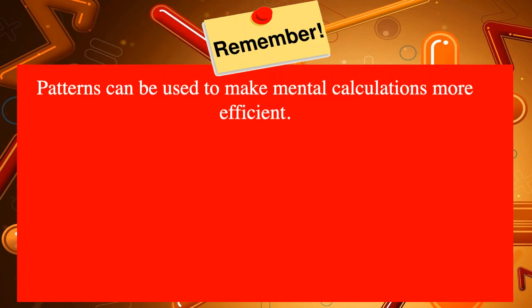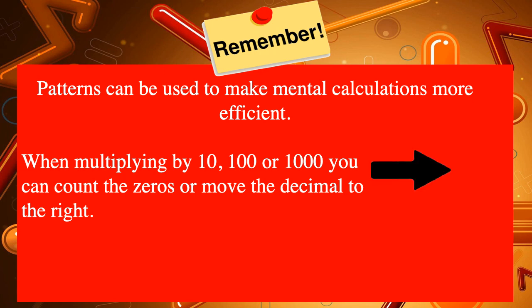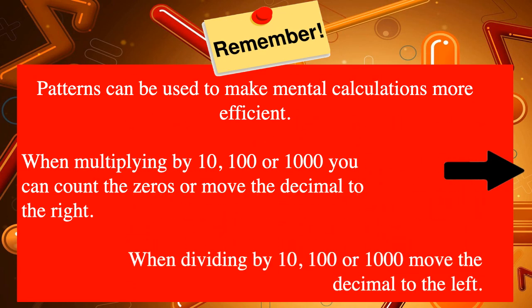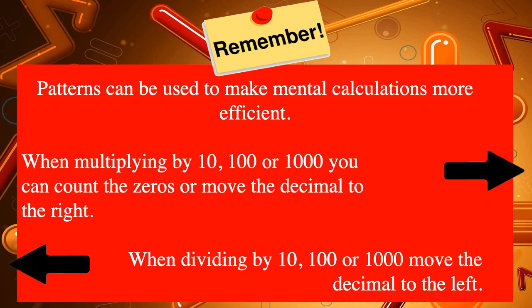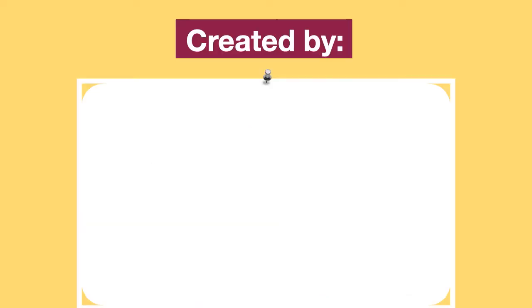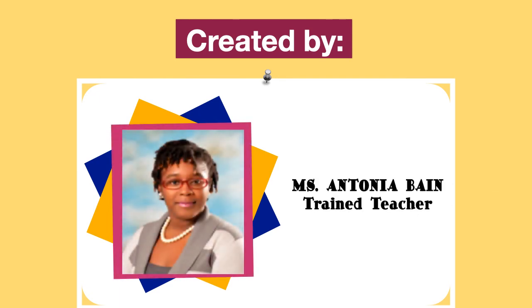Remember, boys and girls, patterns can be used to make mental calculations more efficient. When multiplying by 10, 100, or 1,000, you can count the zeros or move the decimal point to the right. When dividing by 10, 100, or 1,000, move the decimal point to the left. This lesson was created by Miss Antonia Bain.